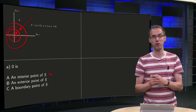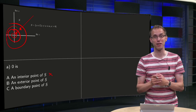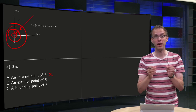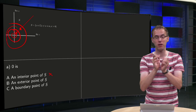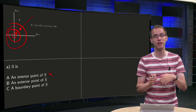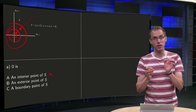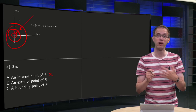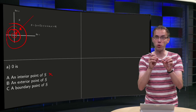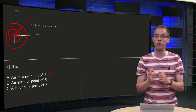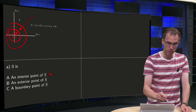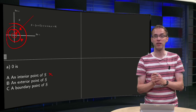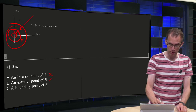What about an exterior point of S? A point is an exterior point of S if it is an interior point of the complement. That means the origin should be in the complement and you should be able to draw a small disk around it containing only points of the complement. The complement is in this case the line, so the origin would be an exterior point of S only if it is an interior point of the line. Of course this is not the case, because if you draw disks around the origin, you always find points which are not on the line. So the origin is not an exterior point of S either.